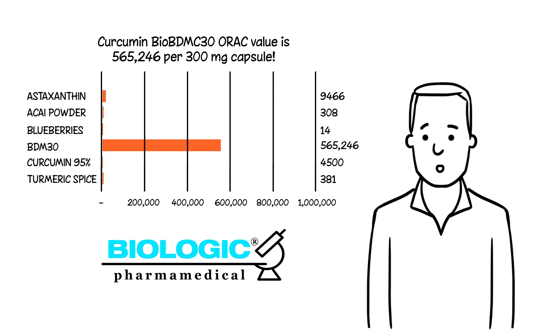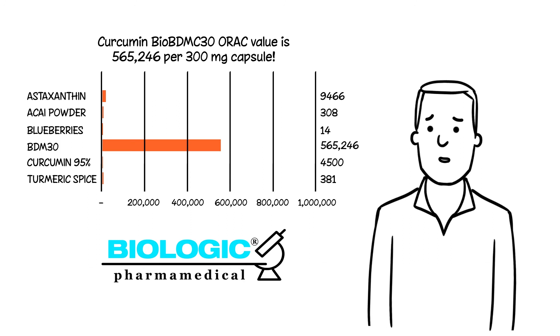Curcumin BioBDMC30 ORAC value is 565,246 per 300 milligram capsule. ORAC is oxygen radical absorbance capacity and it represents the antioxidant's ability to neutralize tissue damaging oxidation. Curcumin BioBDMC30 delivers over 565,000 units of protection per 300 milligram capsule.